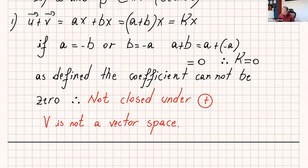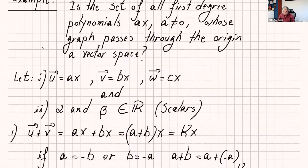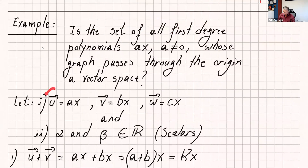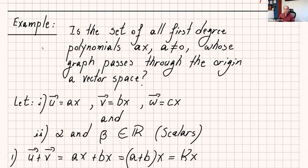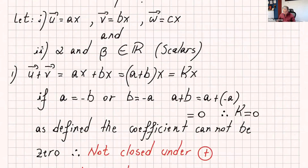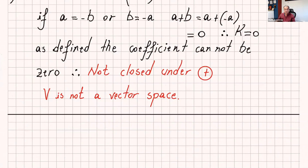Please try some more examples from the textbook. When you start a proof, define u, v, w and your two scalars, then check the axioms one by one. If they all work, it's a vector space. If one fails and you can see from the beginning it's going to fail, go directly to that axiom first — if it fails, you don't have to check the rest. One axiom failing means it's not a vector space. That's it for this lecture; I'll have more examples in the next one. Thank you, everyone, and I'll see you in my next video.